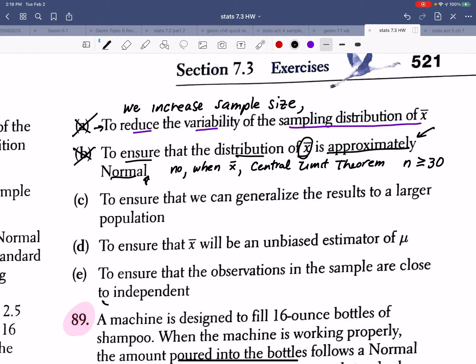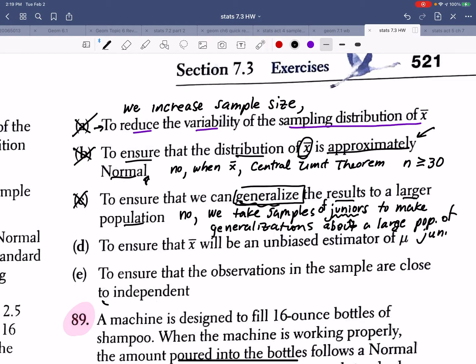What about, do we do the 10% condition to ensure that we can generalize results to a larger population? And that's also going to be a big no. For instance, we take samples, let's say I want to make an inference about, to generalize about the population of juniors. So in order to be able to generalize about a large population of juniors, I need to make sure that I'm taking a sample of juniors, not anything else. So whatever my sample consists of, that is the only group of population I can make an inference about.